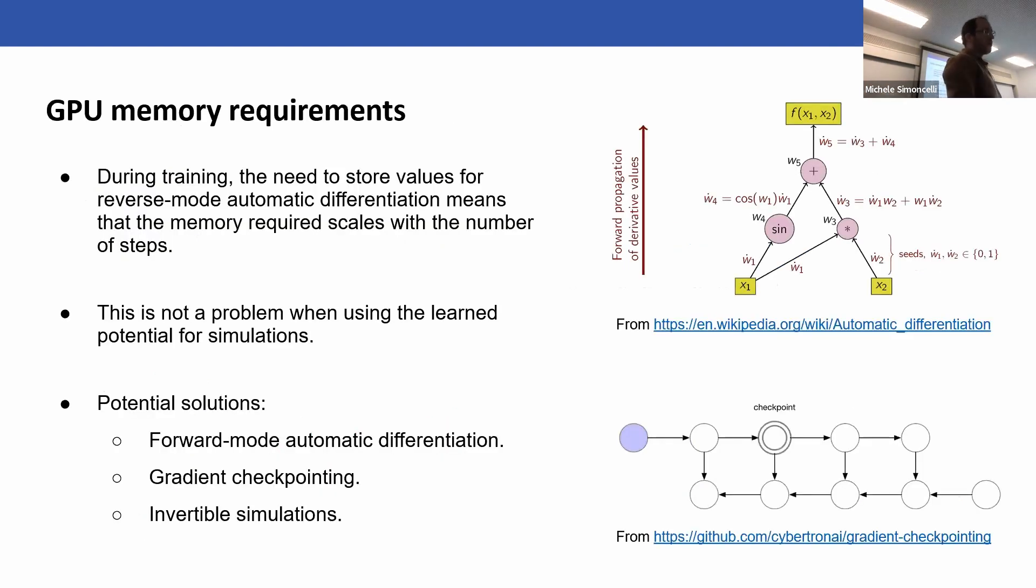But that said, there are some issues with differentiable simulation. One of the big ones is GPU memory requirements. When you're training, you need to store the values for reverse mode AD, and that means the memory required scales with the number of steps. That's a problem if you want to run millions of steps, although I should note that's not a problem when running the simulation in inference - it's only when you're training. There is a big issue in neural networks, so there's quite a large body of work addressing it. You can use forward mode AD, you can use gradient checkpointing, or you can use new algorithms where you invert the simulation and don't record intermediate values.